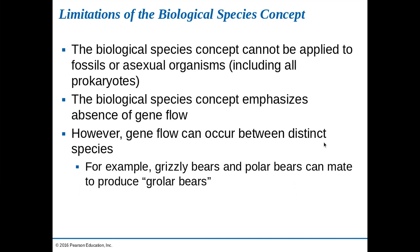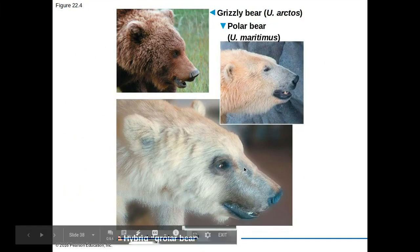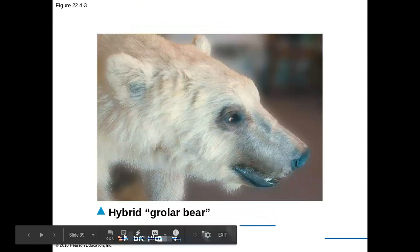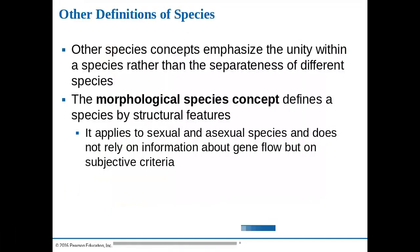Gene flow can actually occur between distinct species. For example, grizzly bears and polar bears can mate to form what's known as a hybrid grolar bear. Because of these limitations, we sometimes have to use other definitions of species.